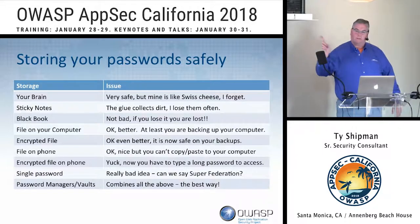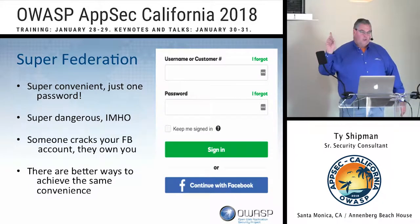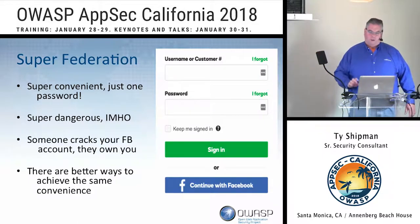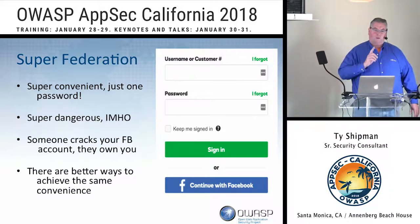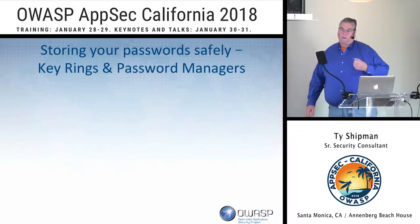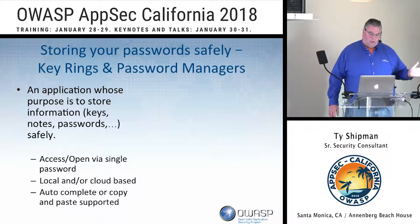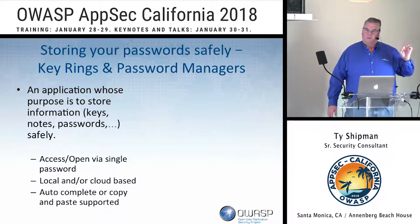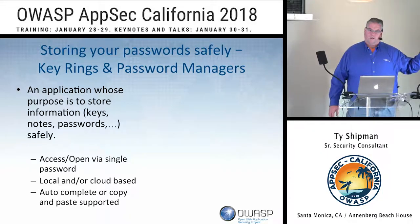Super federation — how many people have seen these things show up? Super convenient, but they're really dangerous. If somebody cracks your Facebook account, they own you. There are better ways to achieve the same convenience. One of them is called the password manager, or password vault, or key ring — multiple names. These are applications specifically designed to hold your digital life behind a super password that only you know, and then you can use those to access your digital sites: Facebook, Twitter, Google, AWS, all those things.